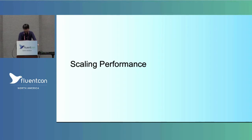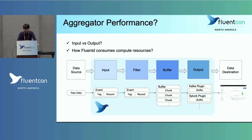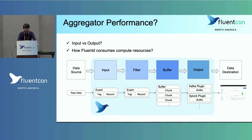Let's move on to scaling performance. Let me first explain the FluentD data pipeline. The FluentD data pipeline consists of mainly four components: input, filter, buffer, and output. FluentD first receives messages from the data source, and you can define custom filters to enrich data or filter out unnecessary data. Then FluentD will buffer the events as a chunk. You can define a custom flush interval, and when the flush interval is reached, the FluentD output plugin will flush buffered events to the destination.